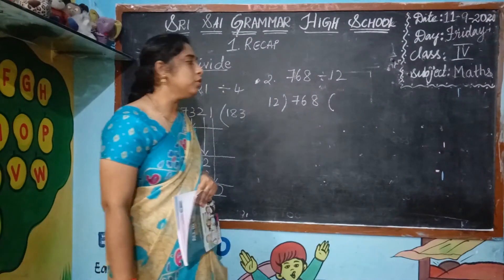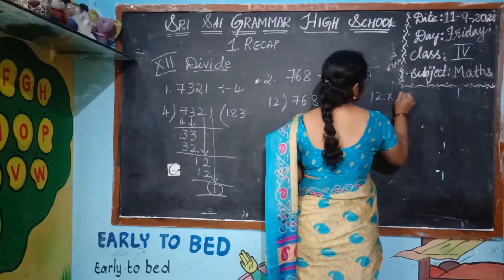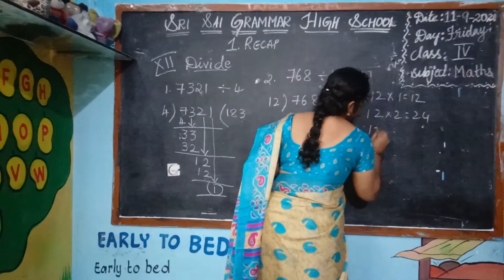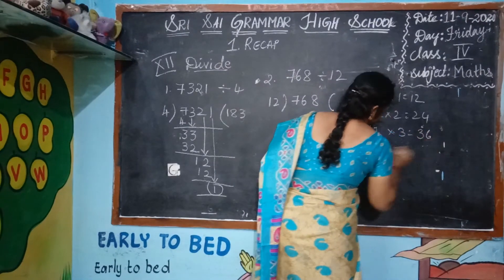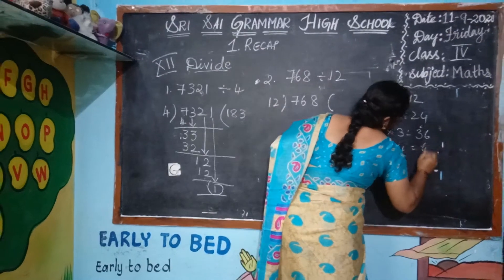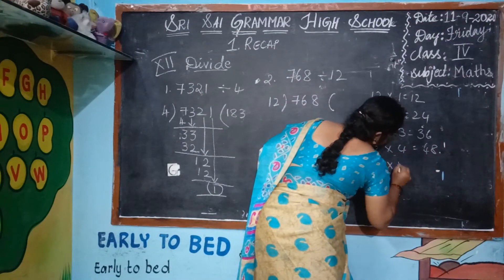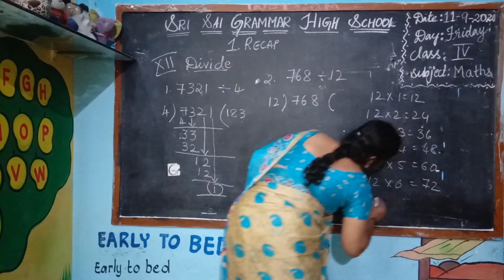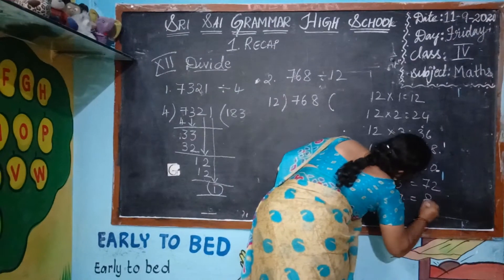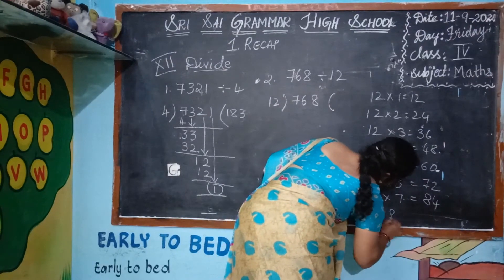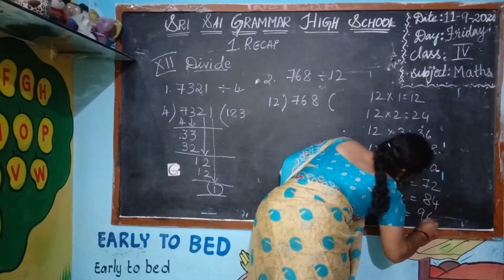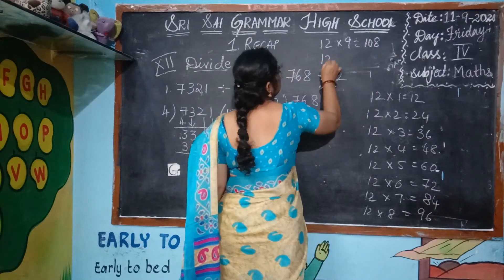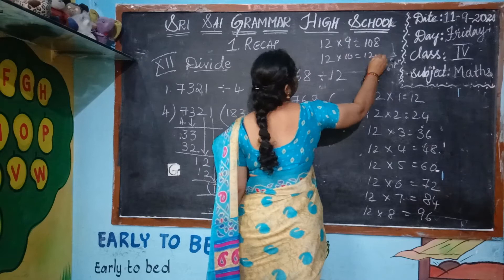How many of you know the 12 times table? 12 ones are 12, 12 twos are 24, 12 threes are 36, 12 fours are 48, 12 fives are 60, 12 sixes are 72, 12 sevens are 84, 12 eights are 96, 12 nines are 108, and 12 tens are 120.